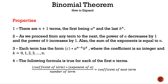Now let's take a look at the properties. Here are the other patterns when dealing with the binomial theorem. The first property is there are n plus 1 terms, the first being a to the n and the last b to the n. So if we have the quantity of a plus b raised to the power of 10, we have 11 terms because 10 plus 1 is 11. The second property is, as we proceed from any term to the next, the power of a decreases by 1 and the power of b increases by 1. Also, the sum of the exponents is equal to n. If it's still a little unclear, don't worry — we'll discuss it in the examples to come.